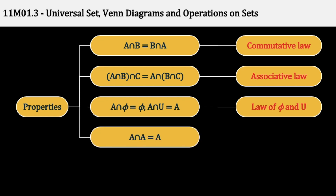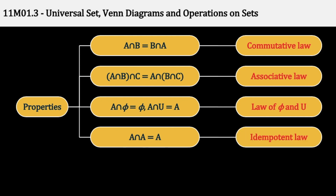चौथा: A Intersection A equal to A. A के common elements A से ही कौन-कौन से हैं? A के सारे elements, hence A Intersection A equal to A. This is called the Idempotent Law.